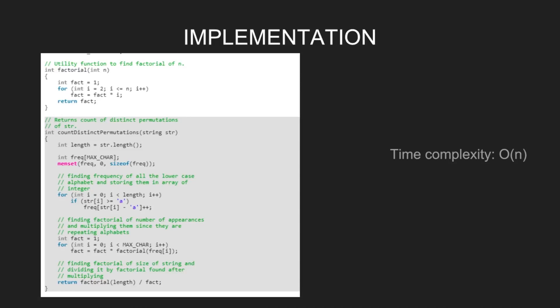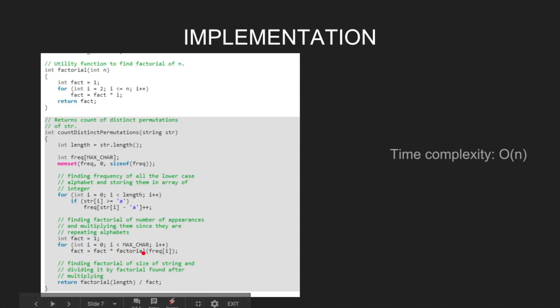The time complexity of this solution is O(n) when we run the loop for finding the factorial. The outer loop runs only a constant number of times. That's it for this video. Thank you for watching. Please leave us your likes and comments.